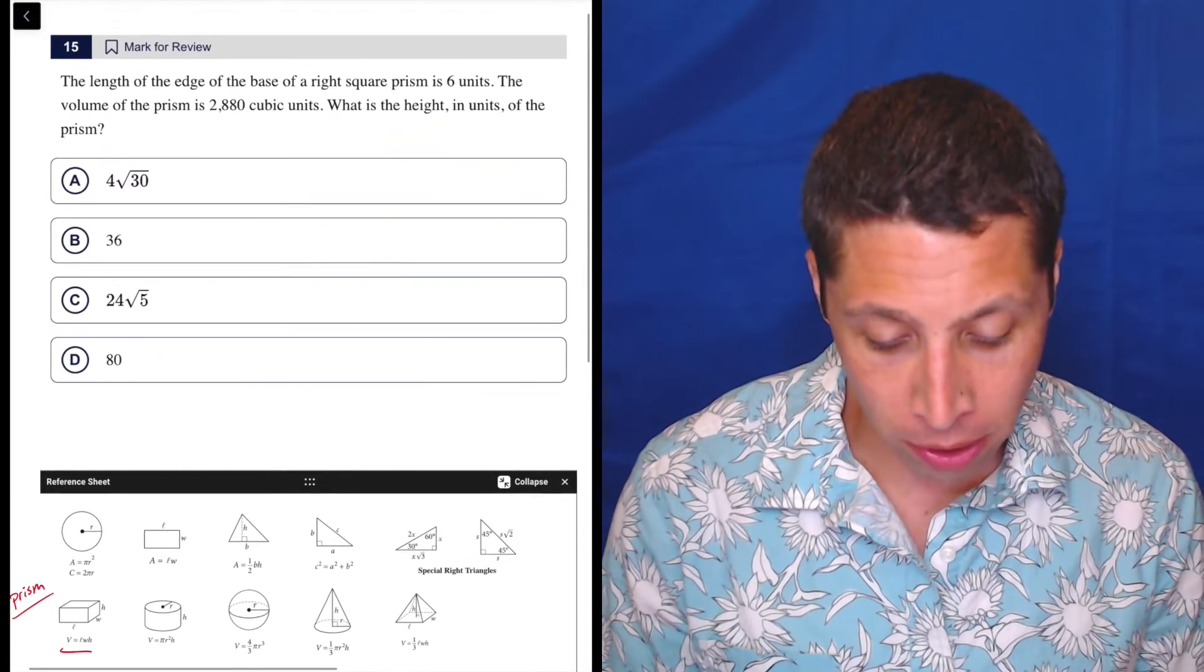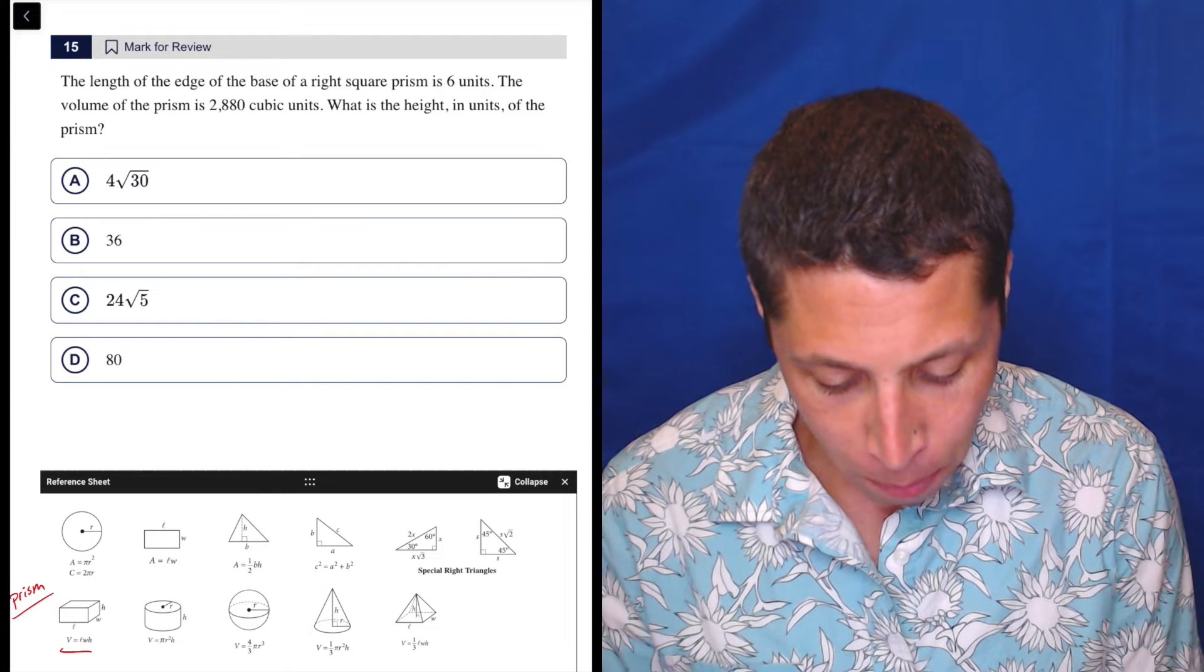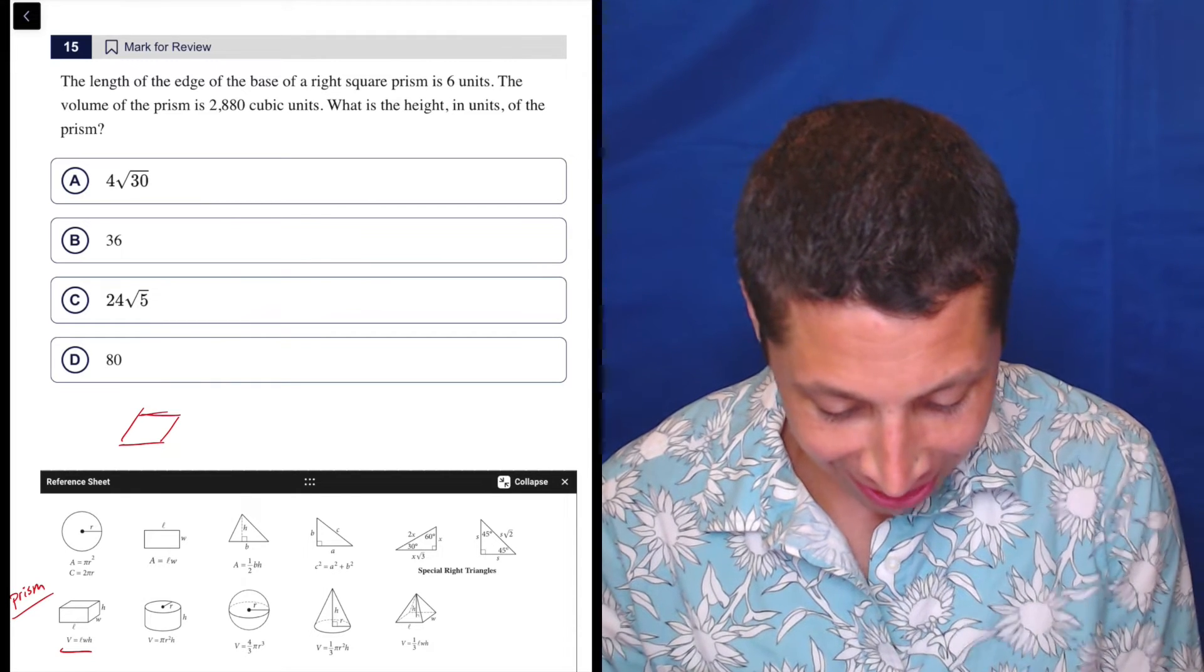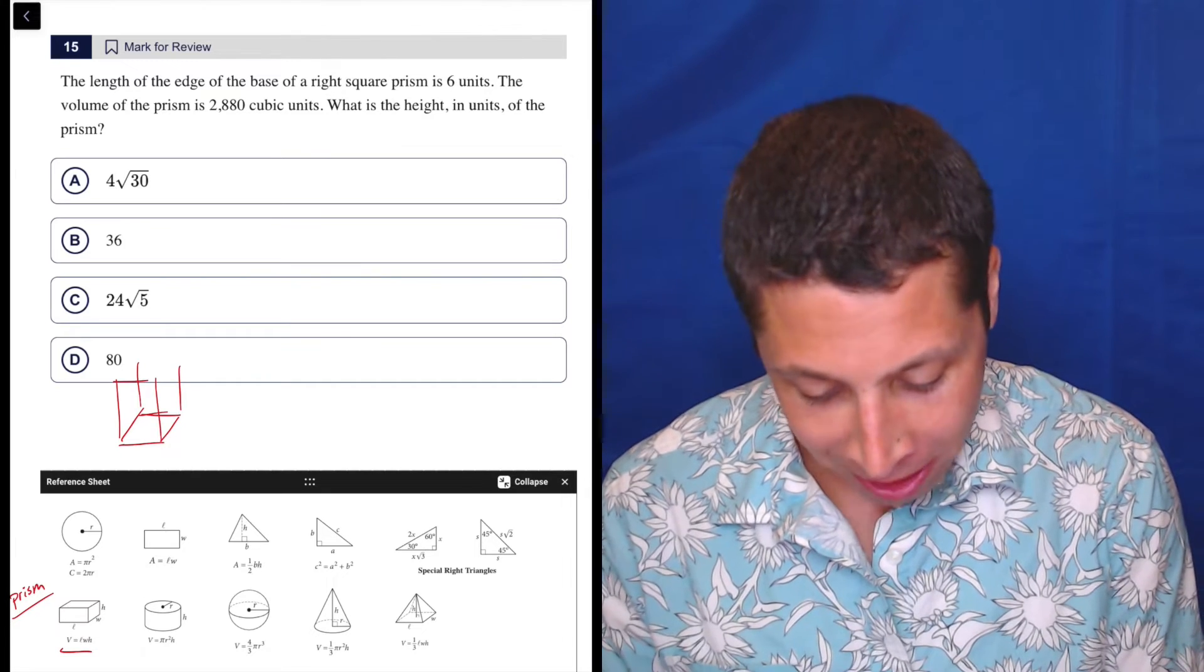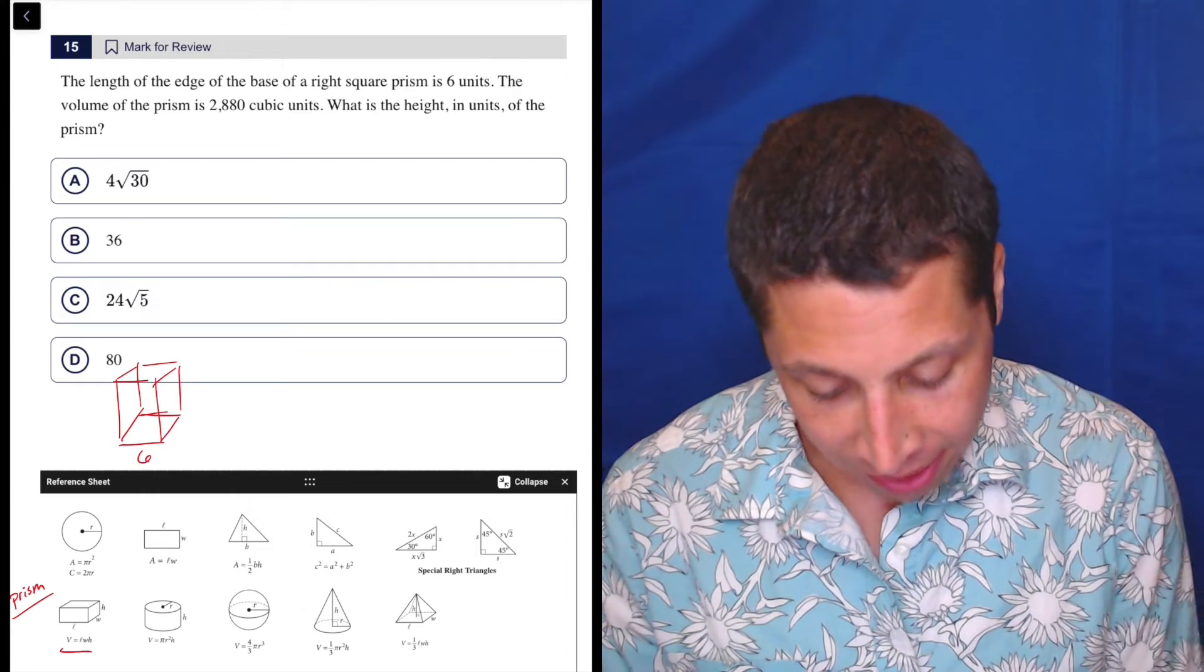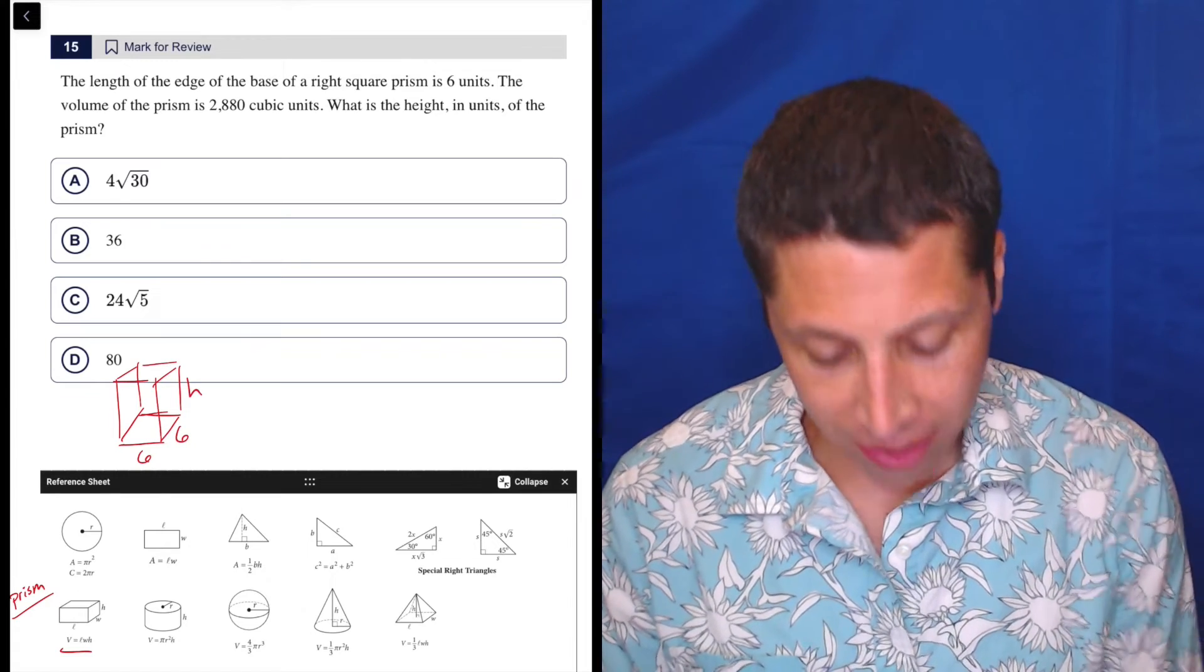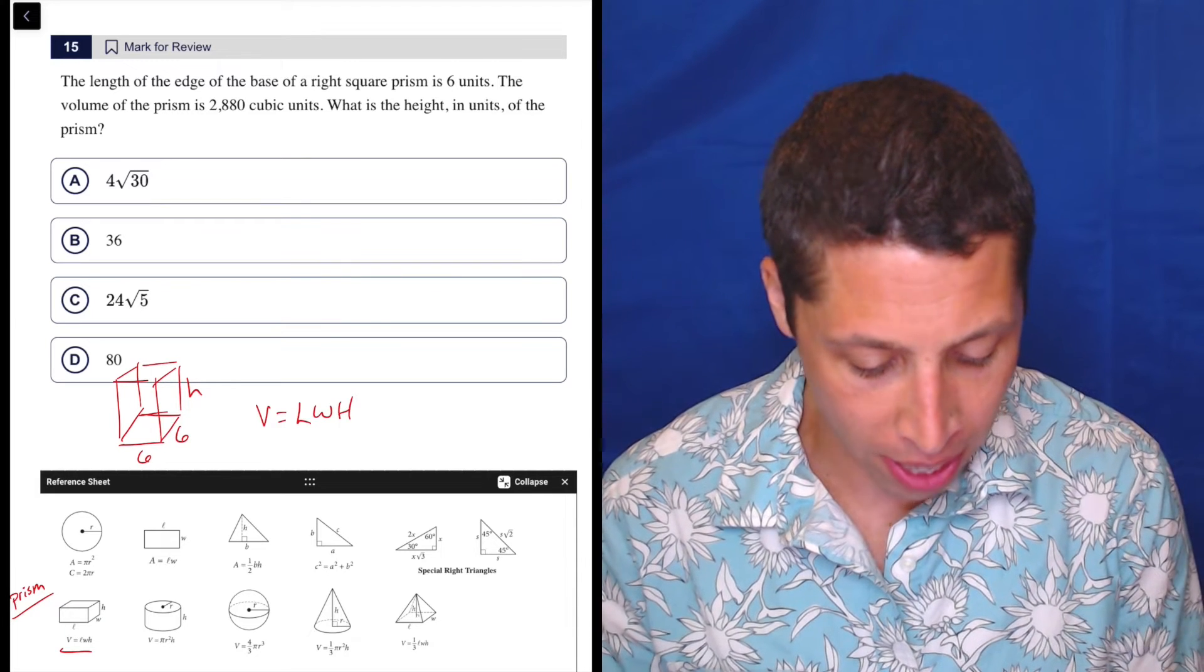So what we should be able to do here is kind of maybe even draw our own if we wanted to. So let me draw one. We know the base is a square, so let me see if I can do this. So that's kind of looking like a square, and then it goes up however much. I'm not an artist, but this is decent. So if the length is six, then what we're supposed to know is that the base is a square, so that means the width is also six. So volume is equal to length times width times height.